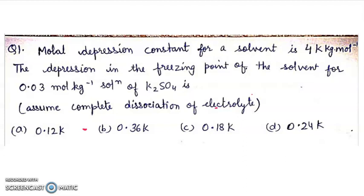First question: molal depression constant for a solvent is 4 Kelvin kg mol inverse. Depression in freezing point of the solvent for 0.03 mol per kg solution of K2SO4 is. Assume complete dissociation of the electrolyte.